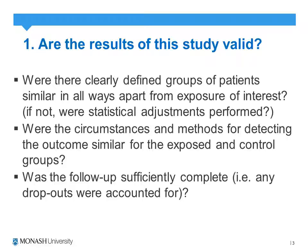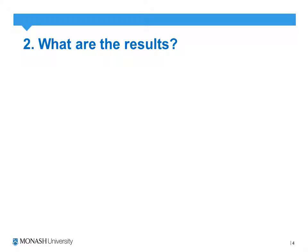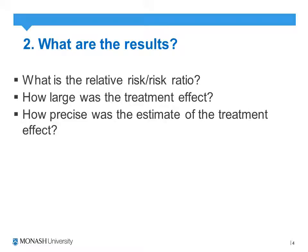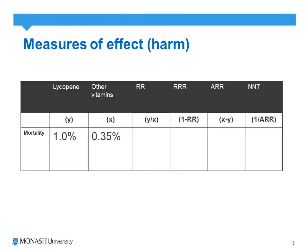The third question asks was the follow-up sufficiently complete? Were there any drop-outs and if so were they accounted for? We're looking at this from an attrition bias perspective. From that we will be asking what are the results — what is the relative risk or risk ratio, how large was the treatment effect, and how precise was the estimate? We will run through relative risk.